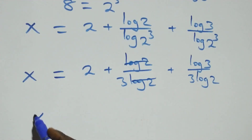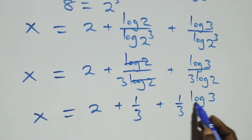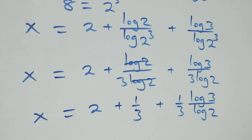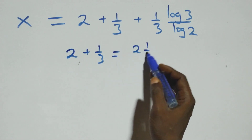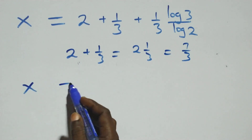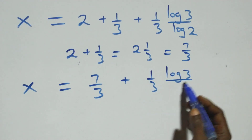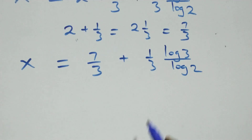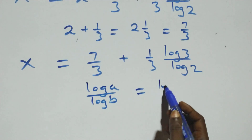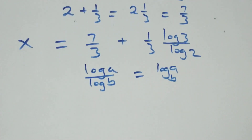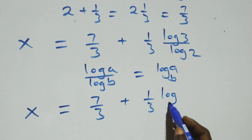So x equals 2 plus 1 over 3, plus 1 over 3 times log 3 over log 2. Then 2 plus 1 over 3 is the same as 7 over 3, so x equals 7 over 3 plus 1 over 3 multiplied by log 3 over log 2. Applying the change of base rule — log A over log B equals log A to base B — this all becomes x equals 7 over 3 plus 1 over 3 log 3 base 2.